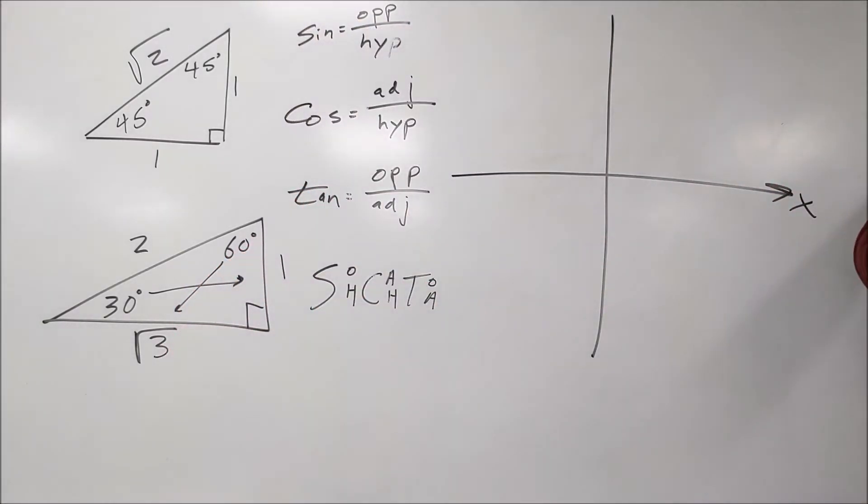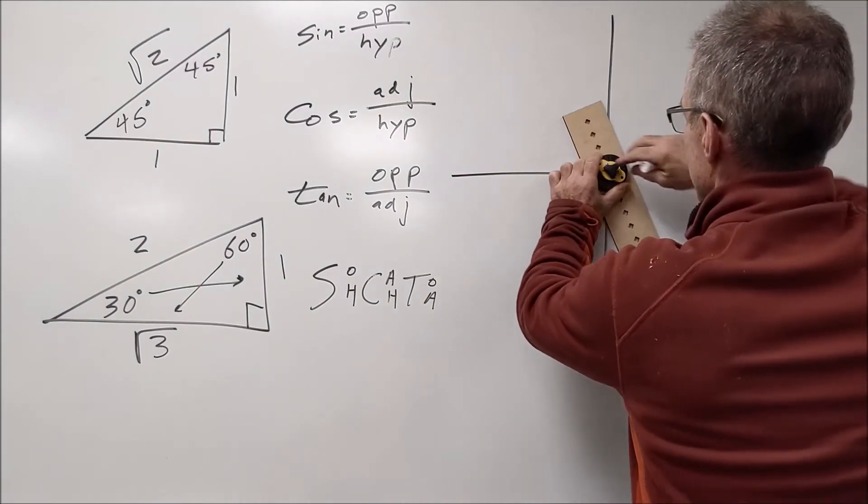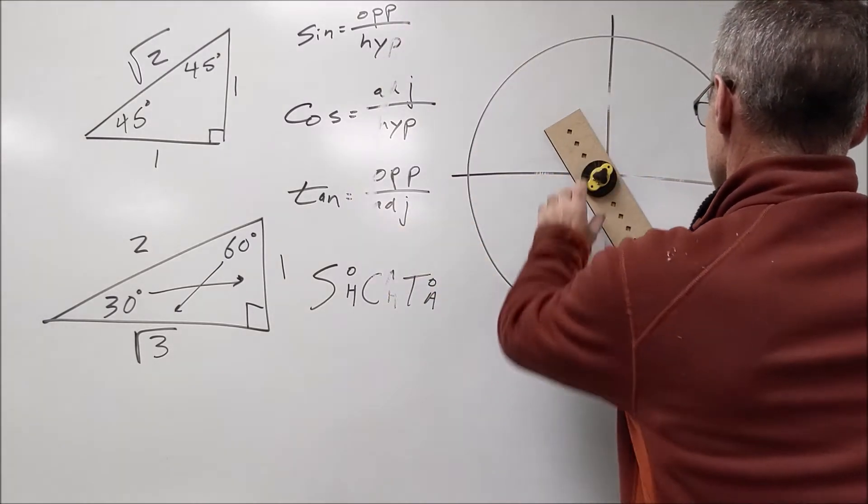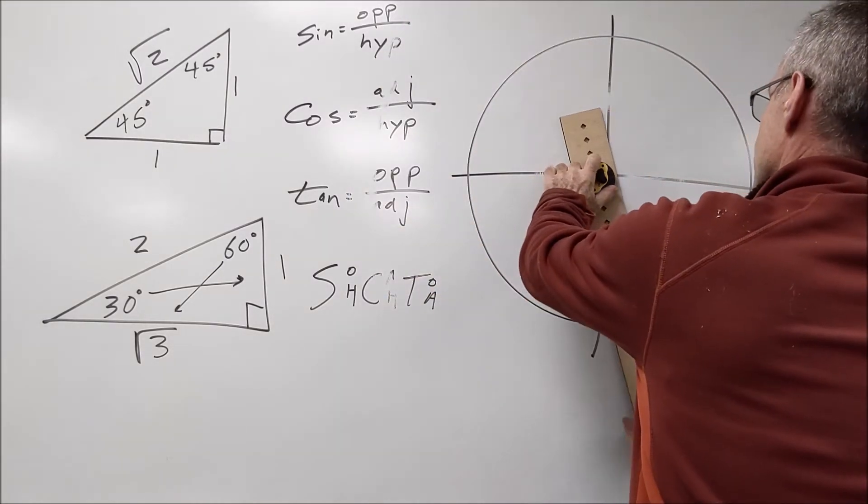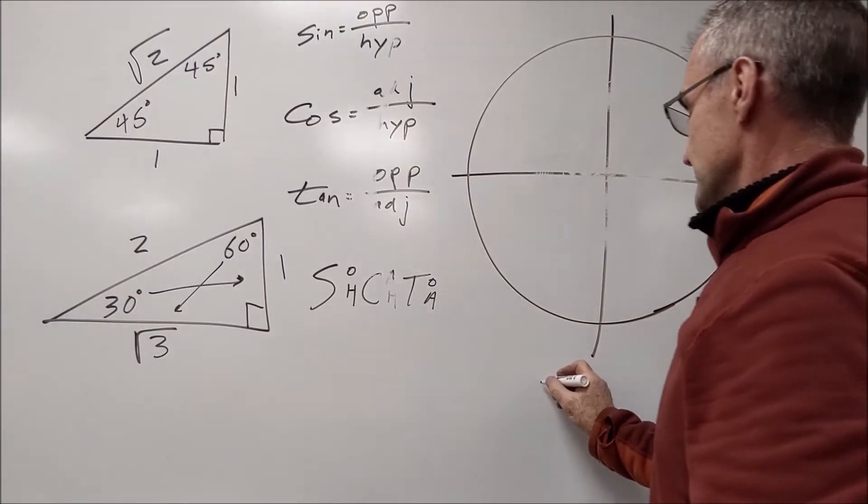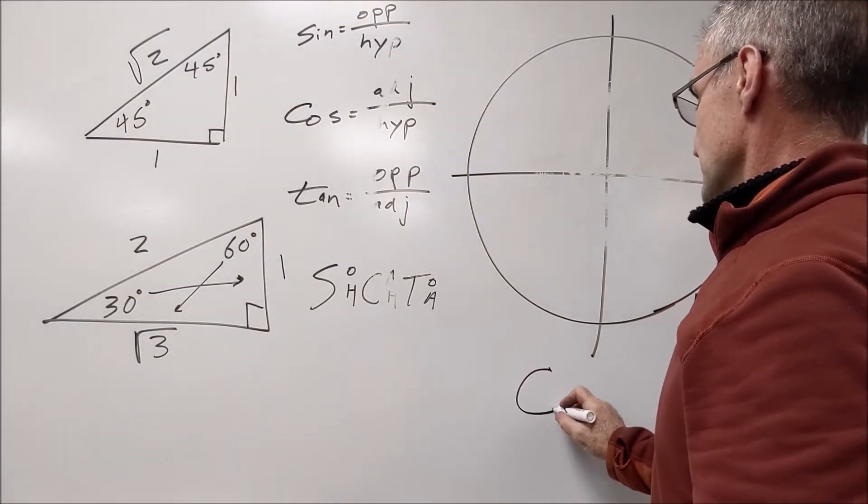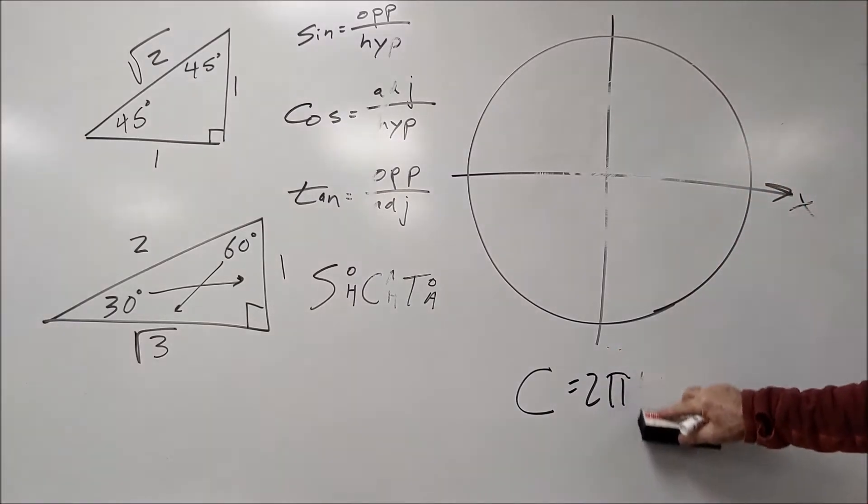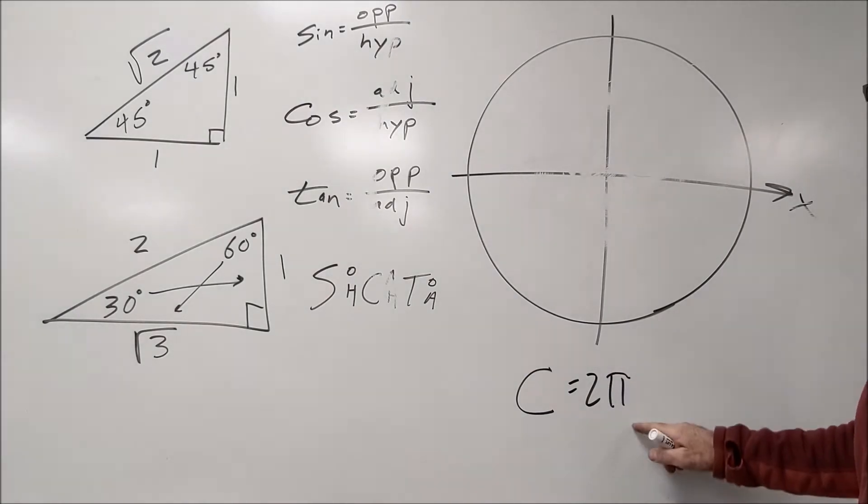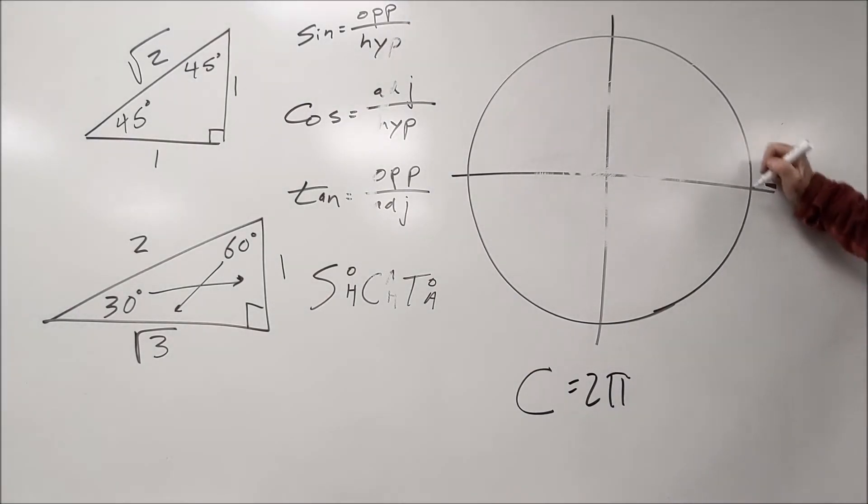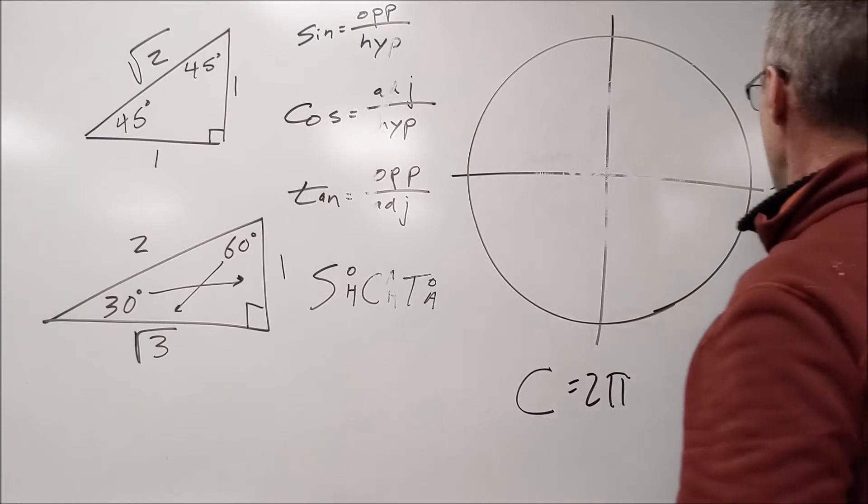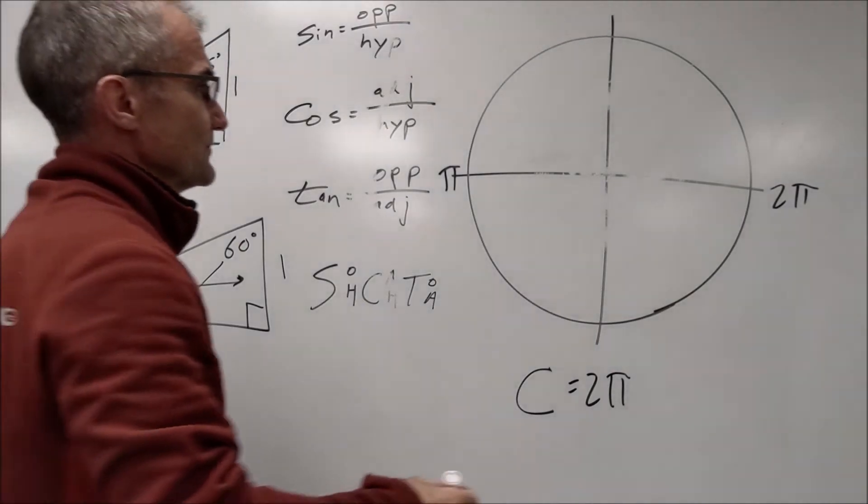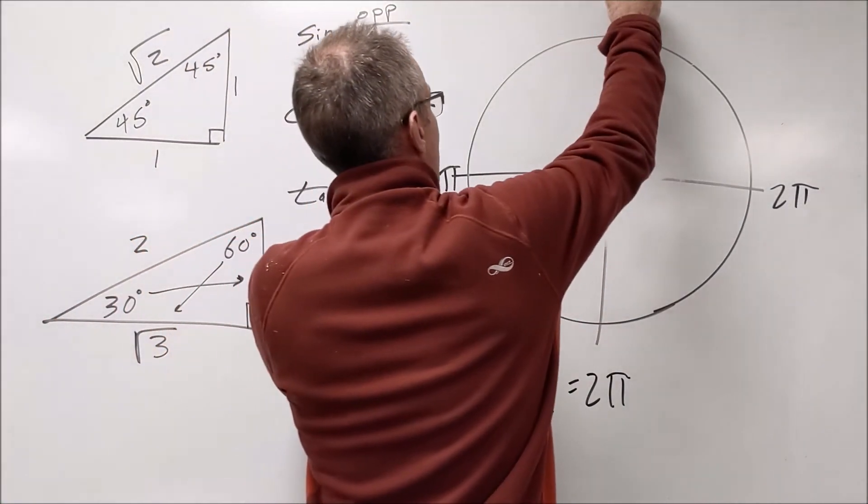We draw that circle again. So I'll do it 10 inches. Circumference is 2 pi r. R again is 1 because it's a unit circle. So all the way around the circle is 2 pi. Halfway around is pi. Now I have to use my fractional measurements and just keep splitting it up.